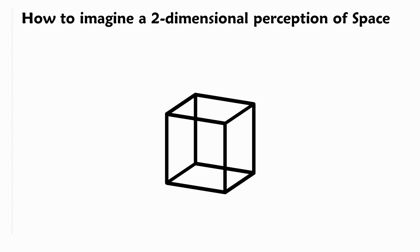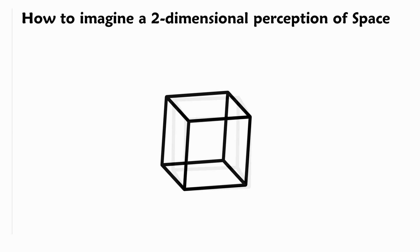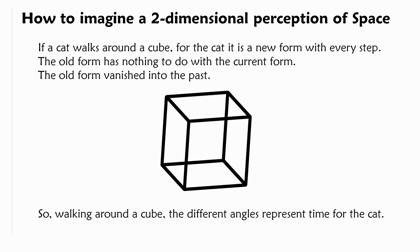How does that work? Let me take this cube and rotate it. So for us, it's the same cube, just rotated. Did you recognize we just use concepts, which animals are not capable of? They don't know cubes. For them, it's a new form. If a cat walks around a cube, for the cat it's a new form with every step. The old form has nothing to do with the current form. For us, the old form is still there if we would go back. But for the cat, the old form vanished into the past. So walking around a cube, the different angles represent time for the cat. You recognize that animals live in three dimensions, but perceive the world in two dimensions.